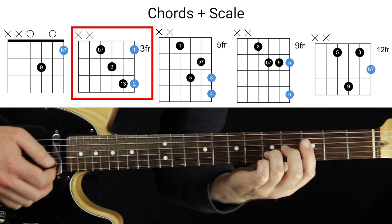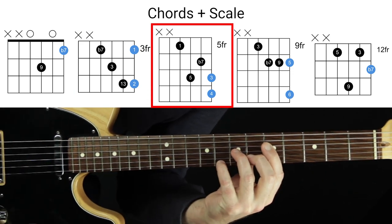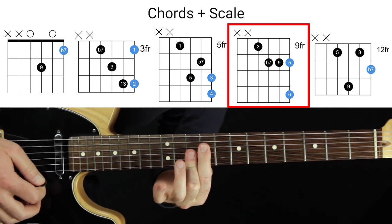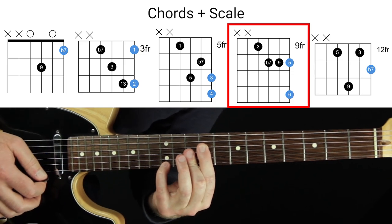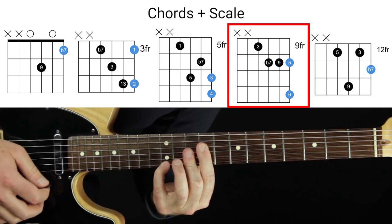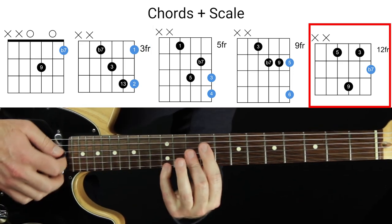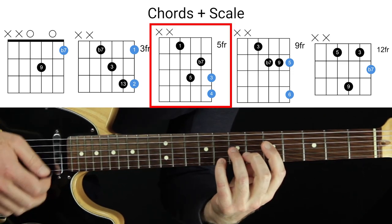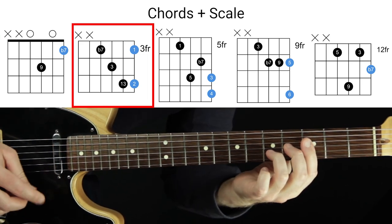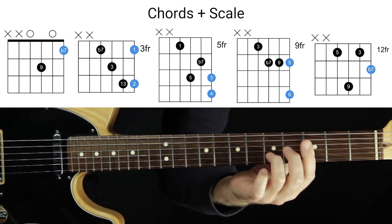Now let's take those chord shapes and play the scales around them. Root on top, two on top, three on top, four on top — I like that, it's now a dominant seven sus four. Five on top, six on top — my favorite chord shape. Flat seven on top, root on top. Flat seven, six, five, four, three, two, one, flat seven, back to one. We're mapping out the scale; you can take your time and use the diagrams on screen.